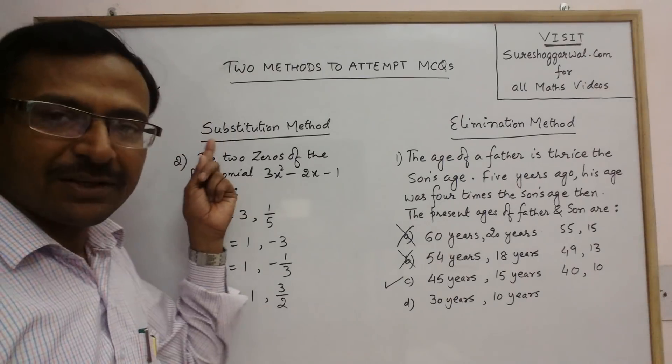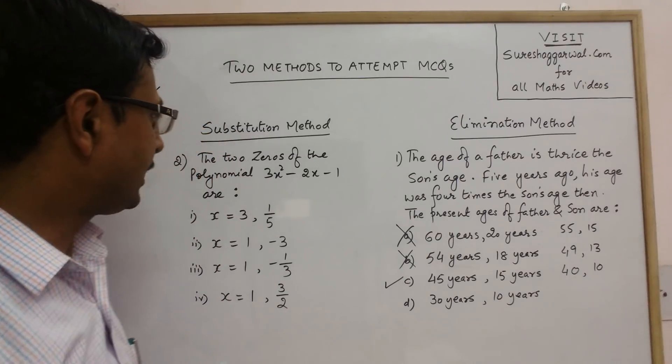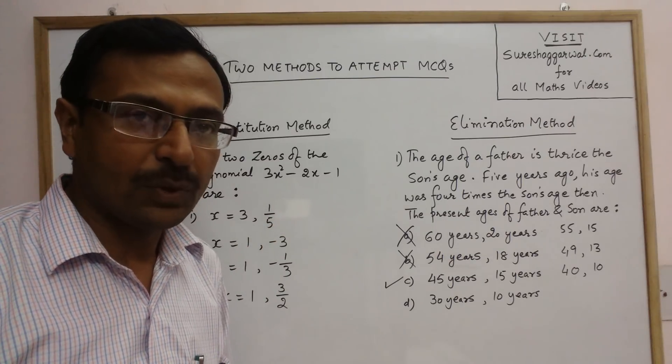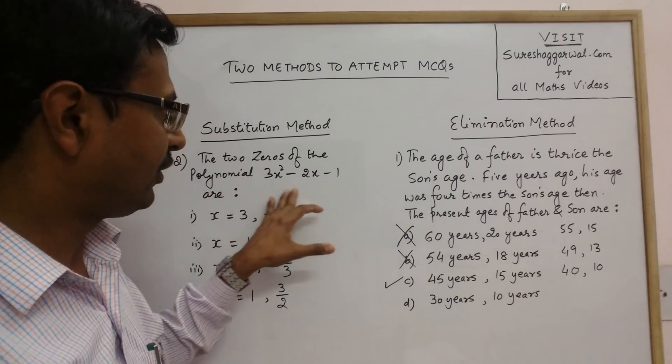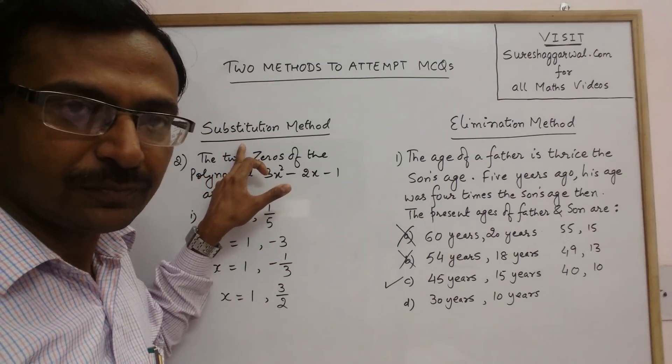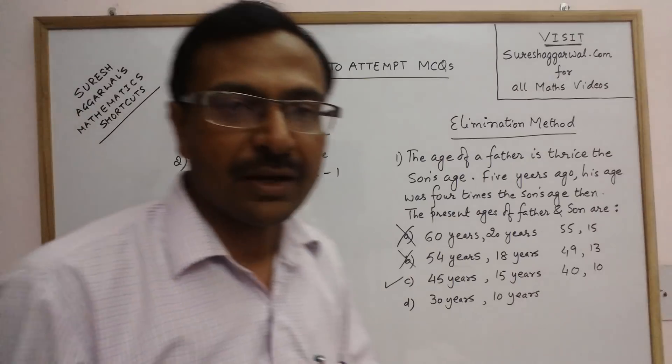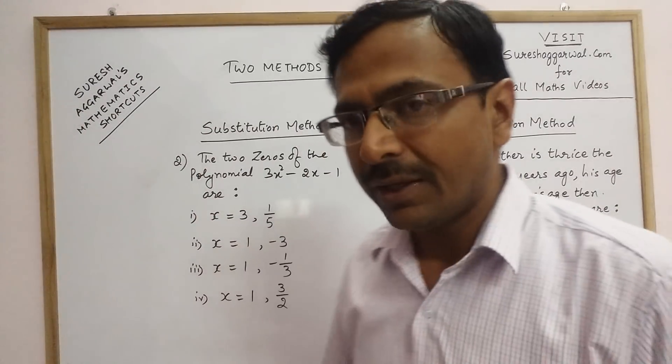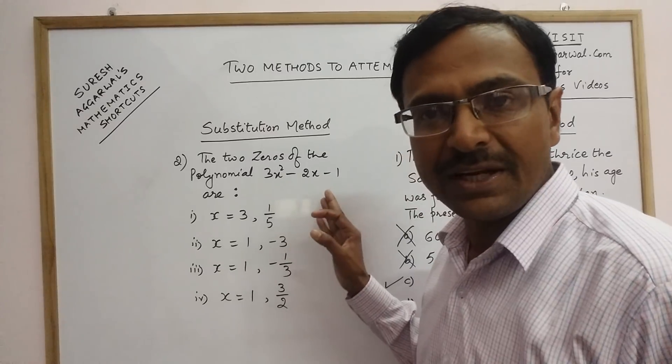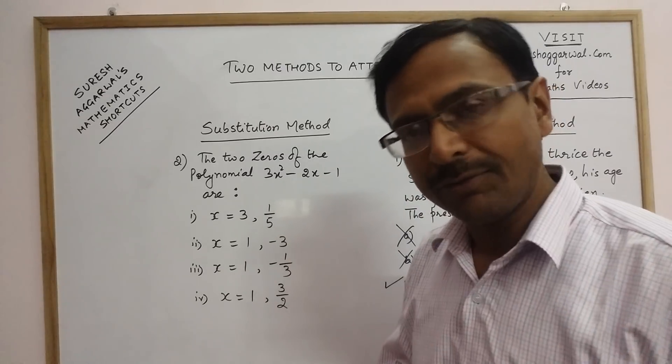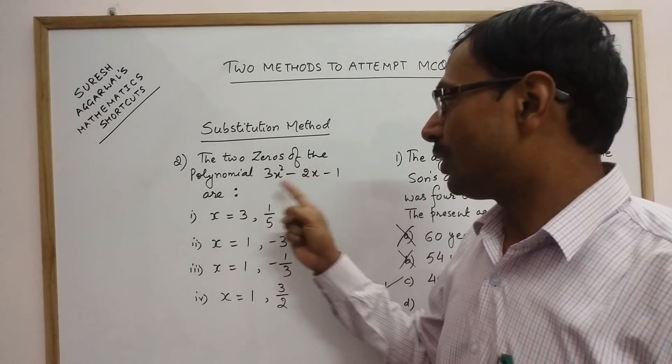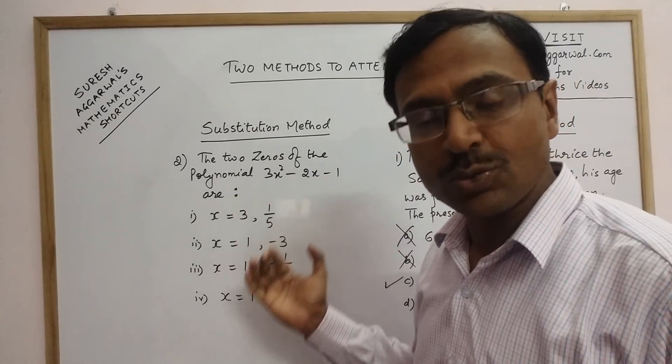Now, the second method of solving the equations, particularly this is for equations or solving particular or factorization of particular polynomials. Now see, this is substitution method. In this problem we are given a polynomial. Now, see this polynomial is 3x square minus 2x minus 1. Obviously, it is a quadratic polynomial and we have two zeros of a quadratic polynomial. Now, the two zeros of this polynomial, we are asked to find the zeros.